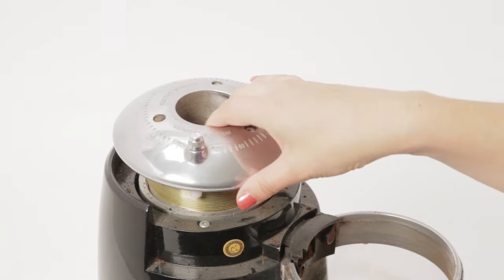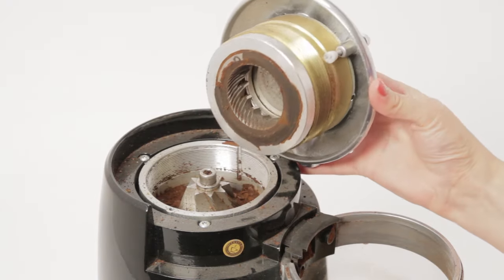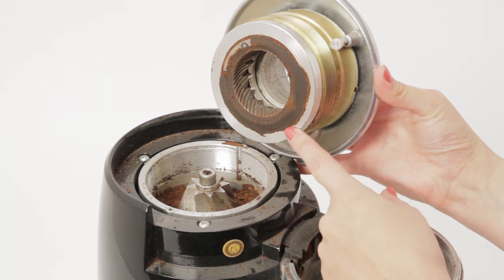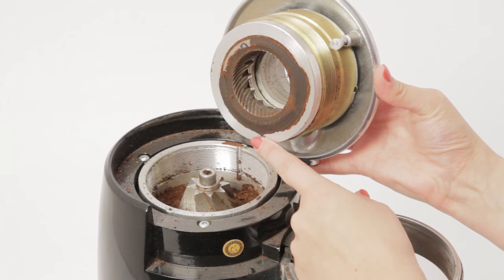First, a look at what happens when a grinder is out of calibration. Notice the coffee caked on the grinding plates. Build up like this prevents fine adjustment and results in poor grinder performance.